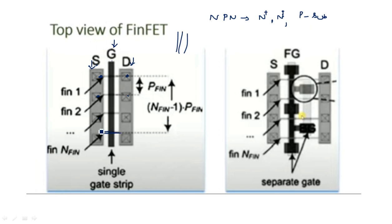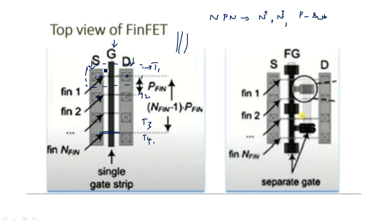A fin is connected from source to drain, another fin from source to drain again, and at last we have a channel — a fin established from source to drain. Each fin represents a transistor: this block acts as transistor T1, here T2, here T3, and T4. However many fins there are, that many transistors will be created. Within the same area, a planar MOSFET creates one structure, but in FinFET the same structure will have multiple transistors.